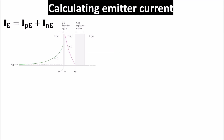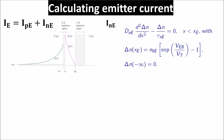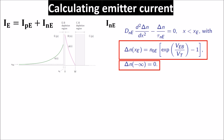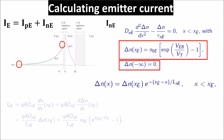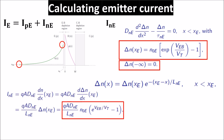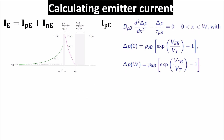To calculate INE we solve the second derivative of the electron distribution knowing the boundary conditions: delta N at XE and delta N at minus infinity. We know the boundary condition from Boltzmann statistics, where the ratio of two carrier concentrations equals the exponential of the potential energy between them. So we know the electron concentration at XE, and delta N equals that exponential minus N0E. At minus infinity — the long emitter limit — delta N is zero because we assume all electrons coming from the base have recombined. The solution of this equation gives us INE. Now we calculate IPE, the major contribution of the emitter current that we want to reach the collector.